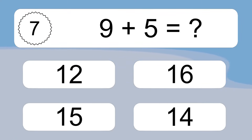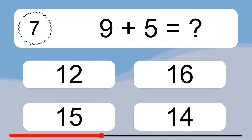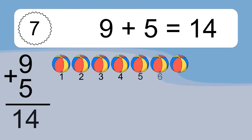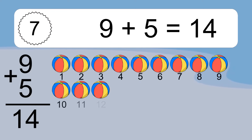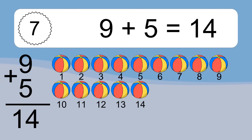4 plus 10 equals 14. Let's count it: 1, 2, 3, 4, 5, 6, 7, 8, 9, 10, 11, 12, 13, 14.